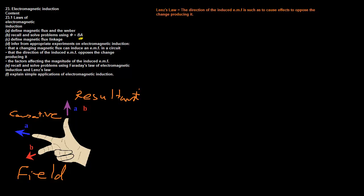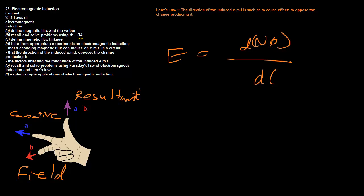So let's combine these two laws. Lenz's Law, summed up, is this: the direction of the induced EMF is such as to cause effects to oppose the change producing it. This basically means whenever you induce the EMF, you're actually going to cause a force in the opposite direction of the movement which is causing the EMF — so this is stopping free energy coming out of nowhere.